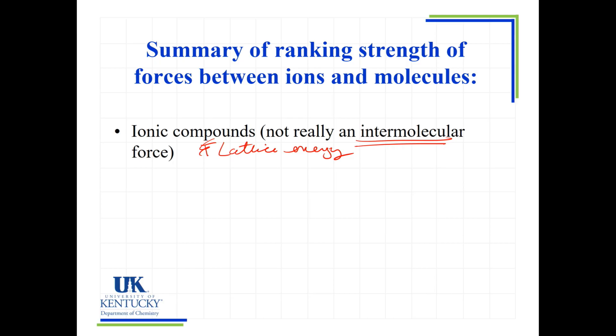And we have lattice energies are really strong because they are full positives being attracted to full negatives. They have very strong interactions between their ions, and so we would always look and list them first. They would not only have the strongest attraction between their entities, not really between molecules, but between their entities, and they would have the highest melting point, or for that matter, boiling point.